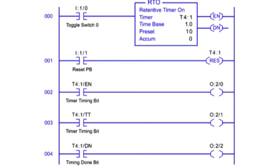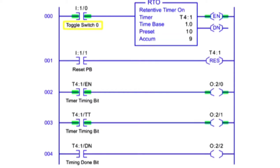The Retentive Timer On is enabled and begins timing when the input conditions are true. By changing the input condition to false in the Retentive Timer circuit, the accumulated value stops timing and retains the time recorded until the input condition goes true again. As the accumulated value reaches the preset value, the Done bit goes true and enables the output. A programmed reset instruction with the same address as the timer is used to reset the Retentive Timer's accumulated value.